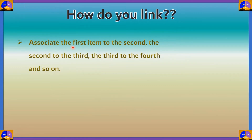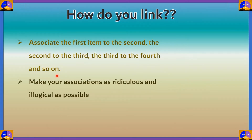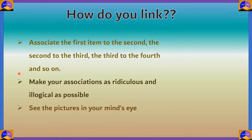The first thing is to associate: in a list of items, we associate the first item to the second, the second to the third, the third to the fourth, and so on until we reach the last item. We start linking using mental images. Make your associations as ridiculous and illogical as possible. Finally, you have to see these pictures in your mind's eye. This only takes a few seconds when doing it in practice.